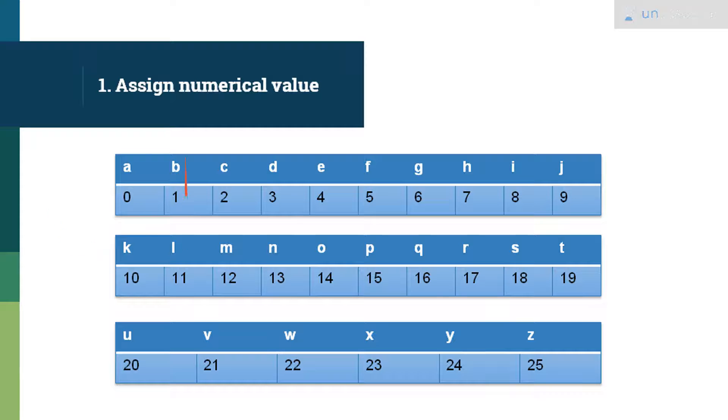So your A becomes 0, your B becomes 1, C becomes 2, D becomes 3, E becomes 4, and so on. Z becomes 25.